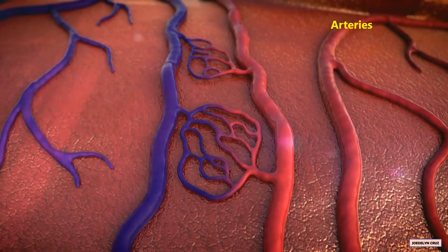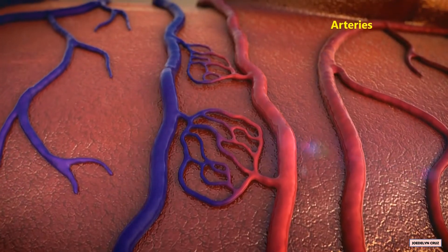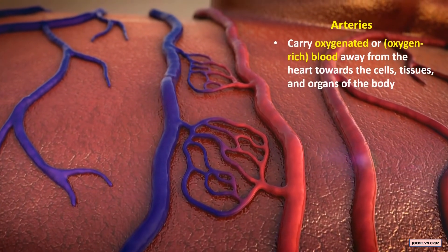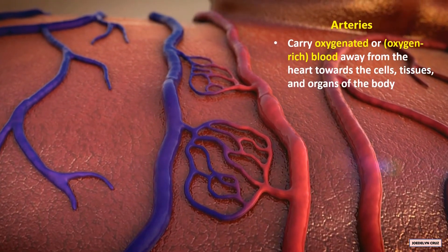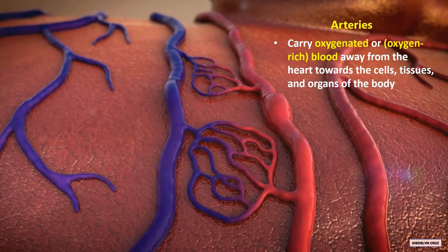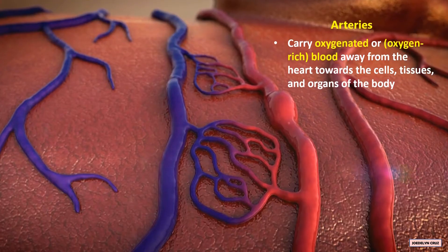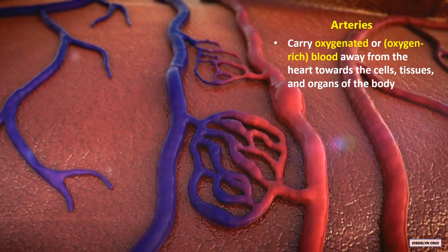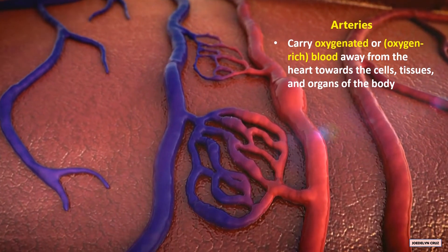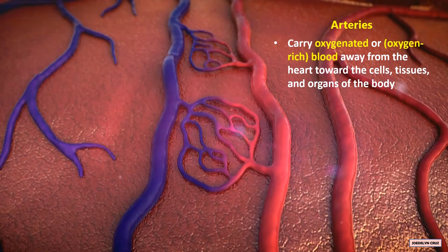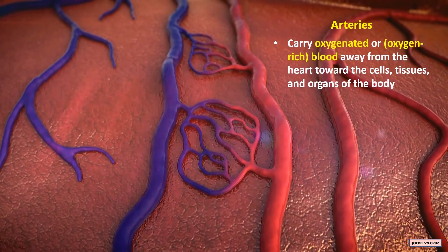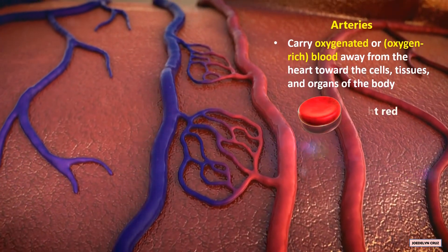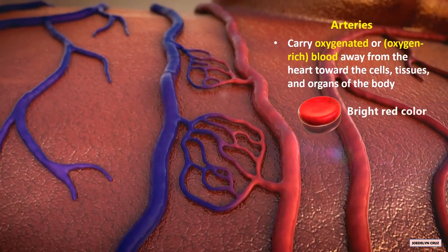Arteries carry oxygenated or oxygen-rich blood away from the heart towards the cells, tissues, and organs of the body. In your body, oxygen-rich blood has a bright red color.